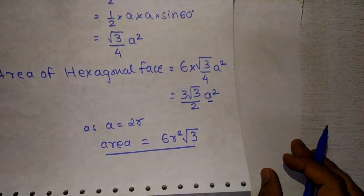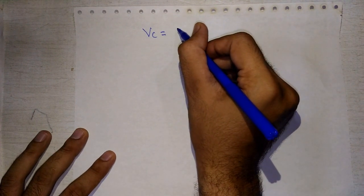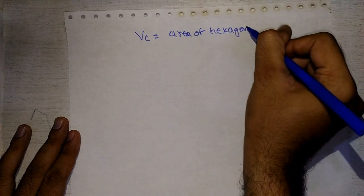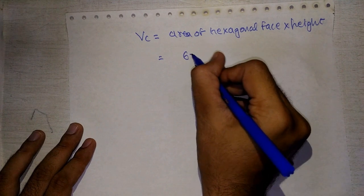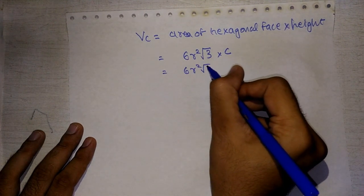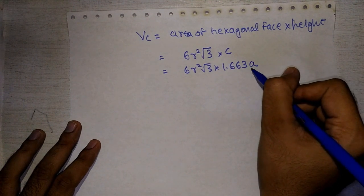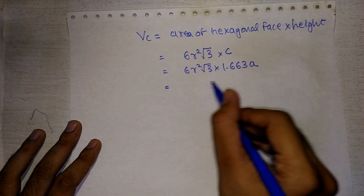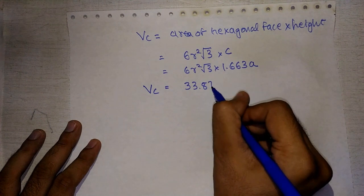To find the volume of the unit cell, Vc = area of hexagonal face × height of the unit cell. The area is 6√3 r² and the height is c = 1.633a. Substituting a = 2r and simplifying, we get Vc = 33.878r³.